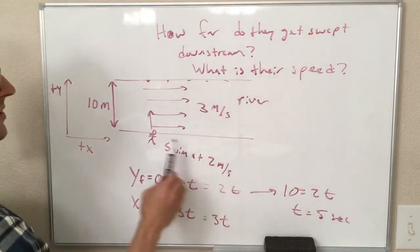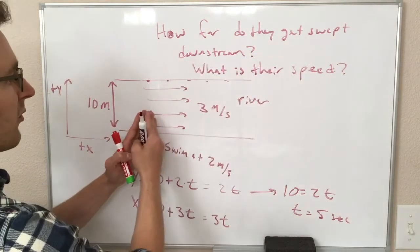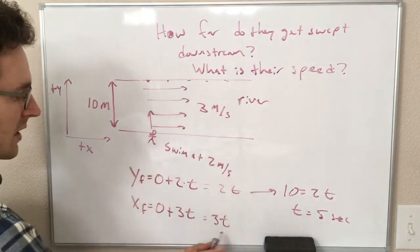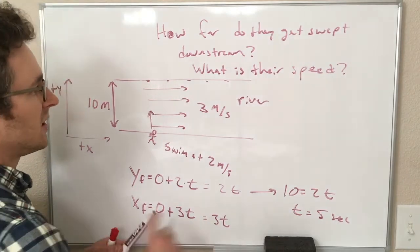and that's the same time, that's the time it takes them to reach the other bank, and so that is the same time where we want to find how far they got swept downstream. So 5 seconds being plugged into here is going to give us the distance of 3 times 5 equals 15 meters.